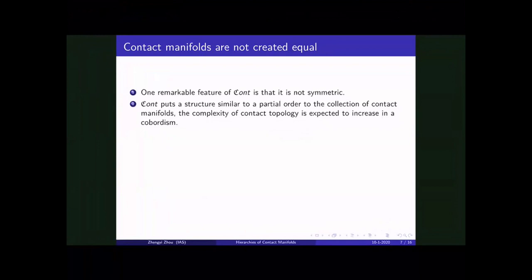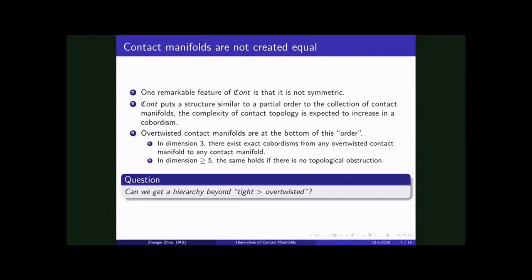And in particular cobordism puts a partial order to the collection of contact manifolds. And the principle here is complexity of contact manifold will increase in cobordism. That is Y plus is always more complicated than Y minus. And so over twisted contact manifolds are actually in the bottom of this order. That is, in dimension three, there exists the exact cobordism from any over twisted contact manifold to any contact manifold. And in dimension bigger than five, the same holds if there's no topological obstruction. That is, if you have almost a complex cobordism between these almost contact manifolds. So this topological construction is totally homotopic theoretical. And so this can be viewed as tight. It's more complicated than over twisted in this hierarchy. But the question is, can we get a refined description of the hierarchy beyond this?